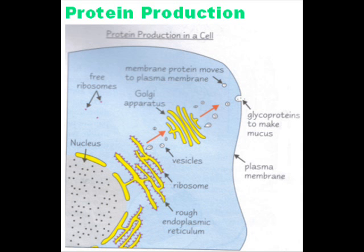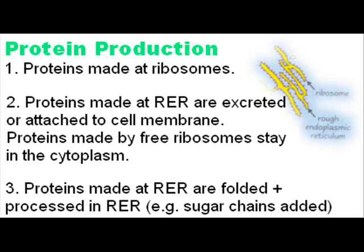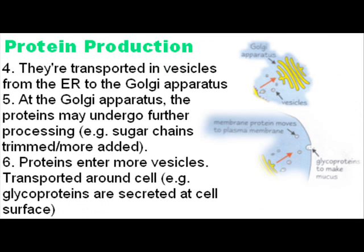Proteins are made at the ribosomes. The ribosomes on the rough endoplasmic reticulum make proteins that are excreted or attached to the cell membrane. The free ribosomes in the cytoplasm make proteins that stay in the cytoplasm. New proteins produced at the rough ER are folded and processed — for example, sugar chains are added — in the rough ER. Then they're transported from the ER to the Golgi apparatus in vesicles. At the Golgi apparatus, the proteins may undergo further processing, for example sugar chains are trimmed or more are added. The proteins enter more vesicles to be transported around the cell. For example, glycoproteins found in mucus move to the cell surface and are secreted.